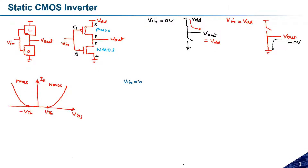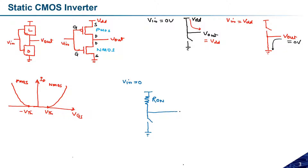In practice, the structure is not simply a short circuit. Let me draw the structure for the practical case. If VIN equals zero volt, the PMOS transistor is on, so the circuit will look like this: there is an on-resistance R_on, an open circuit on the NMOS side grounded, and we observe some output voltage.